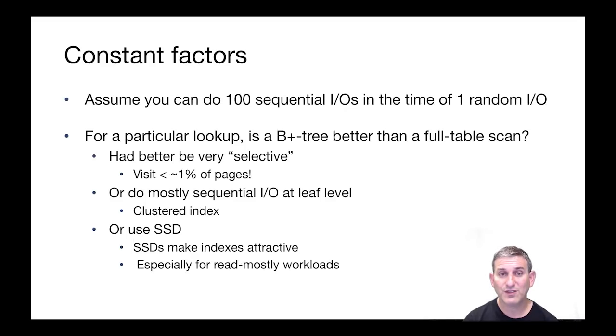Alternatively, you can make sure that your B+ tree also does sequential IO. Most of the IOs obviously in the B+ tree are at the leaf level as you're scanning through a range. So if you can arrange for your leaf level of your B+ tree and the things it fetches, namely the heap file it fetches from, to also be sequential IO, well then you can take a lot more IOs with your B+ tree. And this will be true with a clustered index and definitely not true with an unclustered index. The third alternative here is to make random IOs much less expensive. And SSDs can help with that, particularly for read-only workloads or read-mostly workloads. So SSDs actually can make indexes look quite a bit more attractive than magnetic disks, even for somewhat less selective queries.